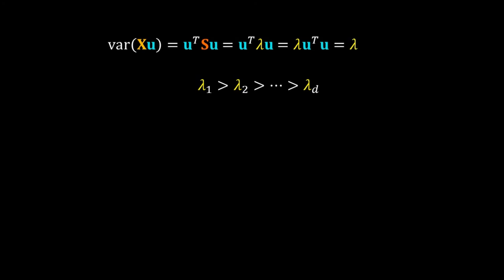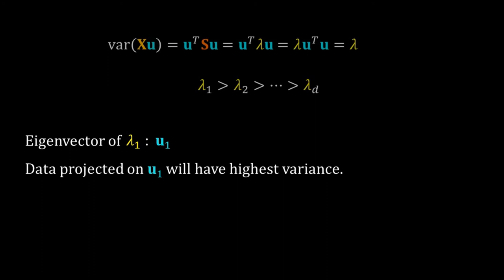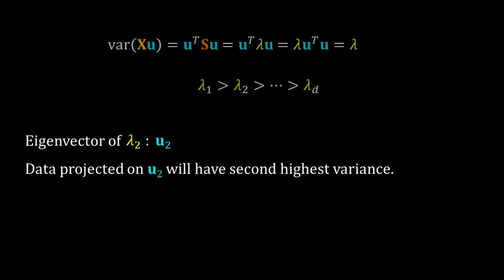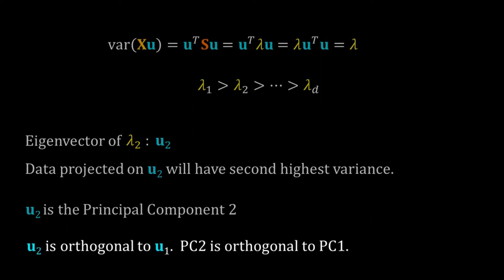We have d eigenvalues. Arrange them in order: λ1 is the largest, with corresponding eigenvector u1. The data projected on u1 will have the highest variance, so u1 is principal component one. Similarly, u2 is the eigenvector for λ2, and the data projected on u2 has the second highest variance, making u2 the second principal component. Since the covariance matrix is symmetric, all its eigenvectors must be orthogonal — so PC2 is orthogonal to PC1.